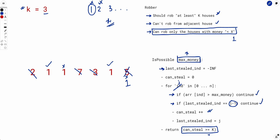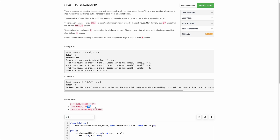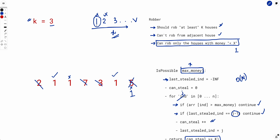The time complexity of the isPossible check is O(n) since it's a single for loop. However, the full solution tries values from 1 up to 10^9 (the maximum house money), giving total complexity O(V × N) where V = 10^9 and N = 10^5. This is too slow and won't pass.